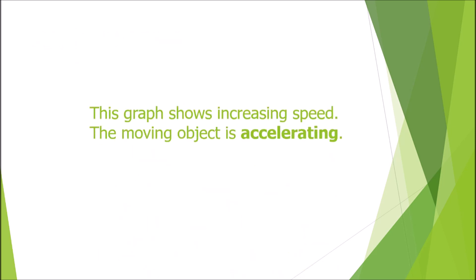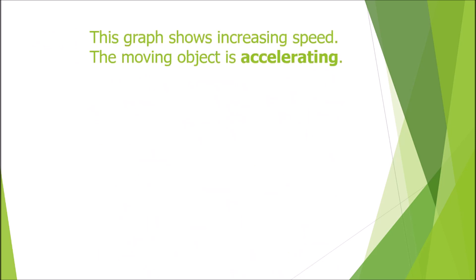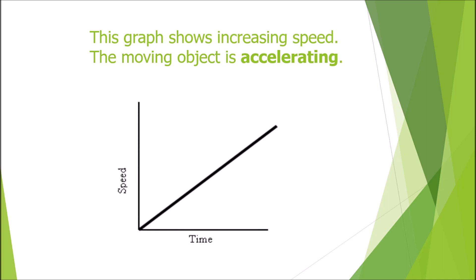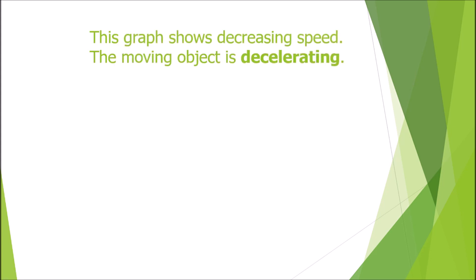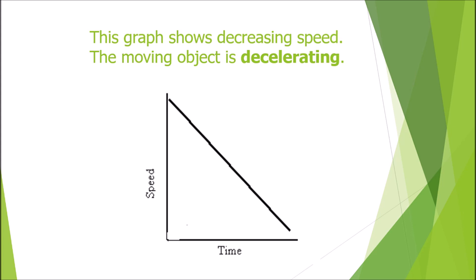This graph shows increasing speed — the moving object is accelerating. As time increases, speed also increases in the same proportion, which is directly proportional. We call this constant acceleration. Another graph shows decreasing speed, meaning the moving object is decelerating. The graph comes down, meaning the object is coming to a halt. This is deceleration — the object is slowing down.